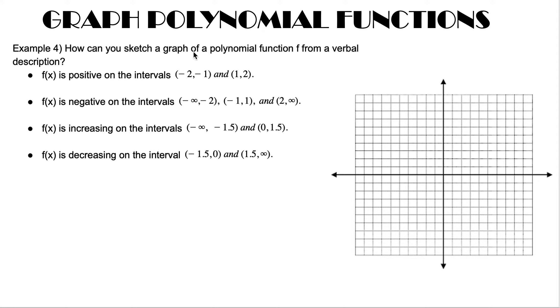How can you sketch a graph of a polynomial function f from a variable description? f of x is positive on the intervals (-2, -1) and (1, 2).